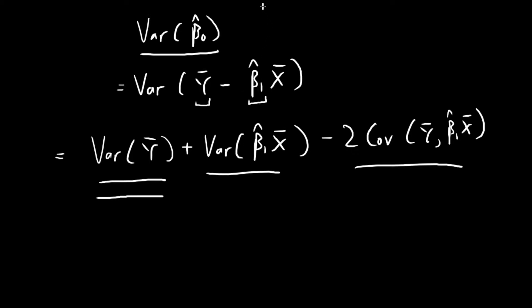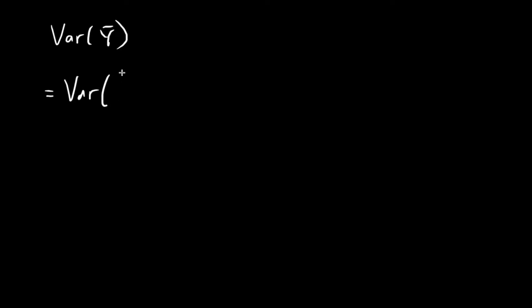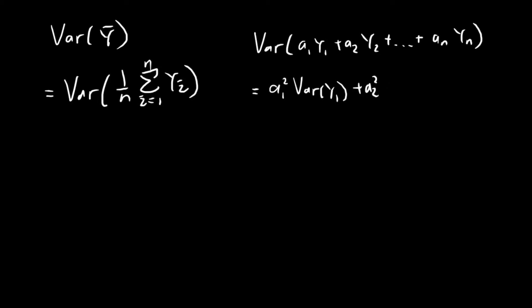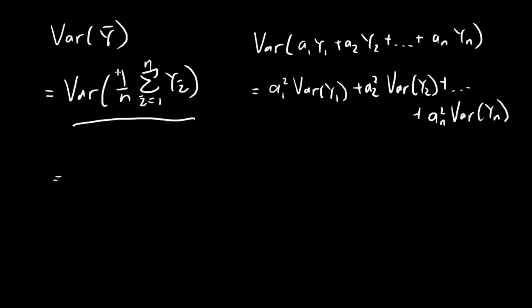Let's first focus on the variance of the sample mean of y. This is just equal to the variance of (1/n) times the sum of all n terms. You'll see that this is equal to the variance of some constant times y₁, plus some constant times y₂, all the way to some constant times yₙ. As explained in the last video, the variance of such an expression equals a₁² times Var(y₁) plus a₂² times Var(y₂) and so on. In this case, all the constants a₁, a₂, ..., aₙ are all equal to 1/n.